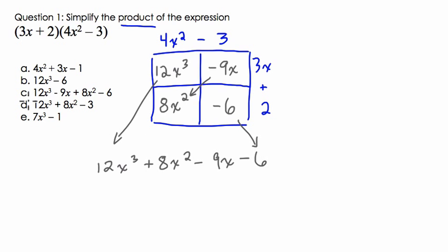So, that would be our answer. And I see that the closest thing we have is choice C. Notice that the order is slightly different. They wrote 12x to the third, minus 9x, and then plus 8x squared, minus 6. This is the same thing.